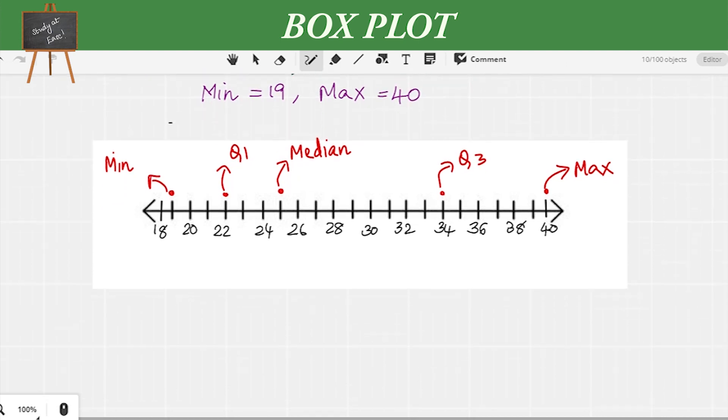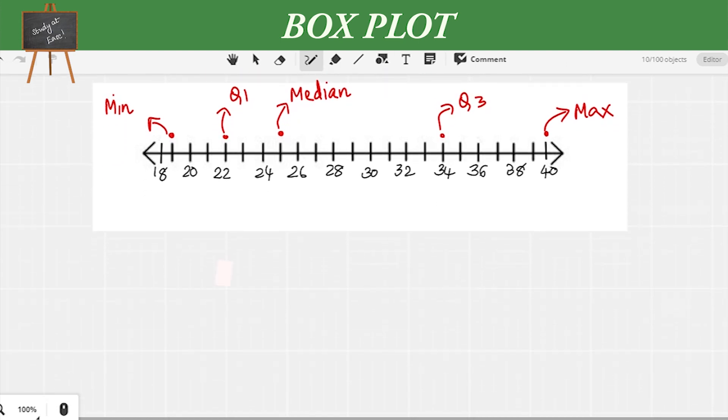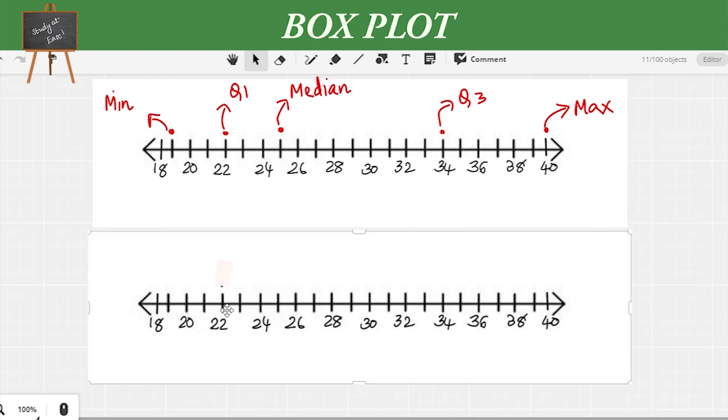Now we're going to see how to draw a box plot. We draw vertical lines on top of Q1, median, and Q3—that's 22, 25, and 34. Now join these three lines to form a box.